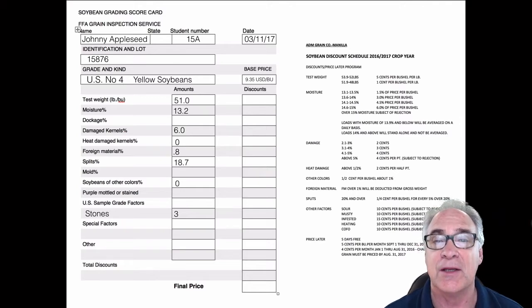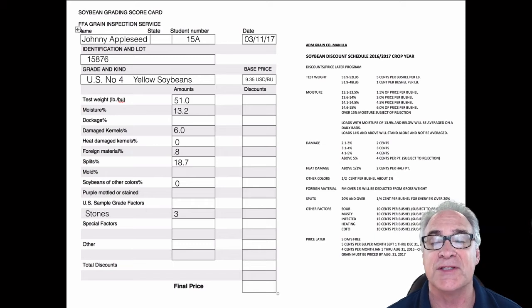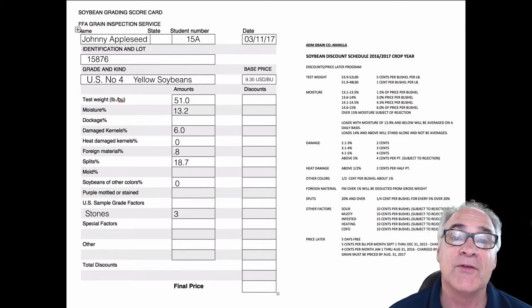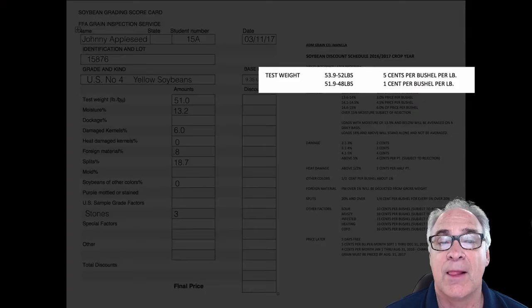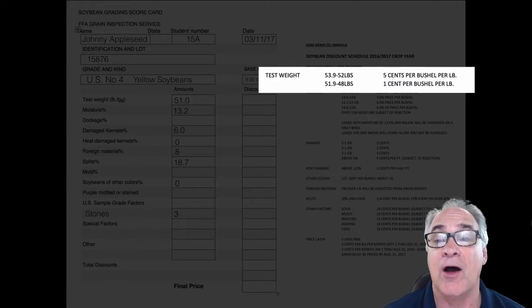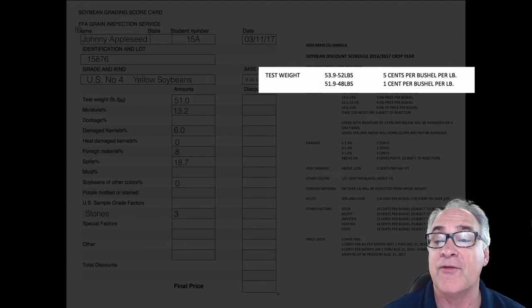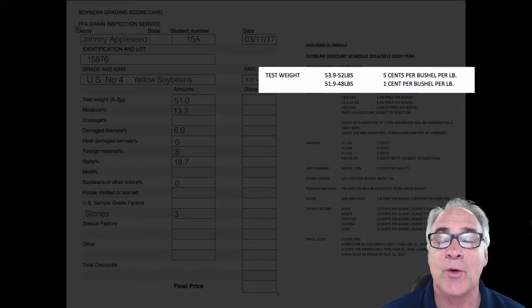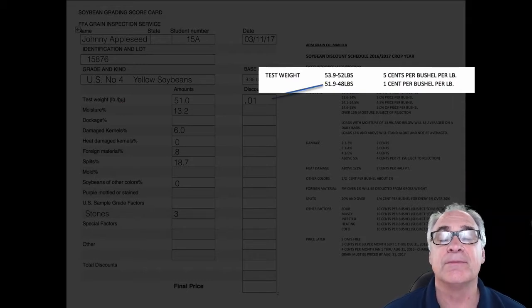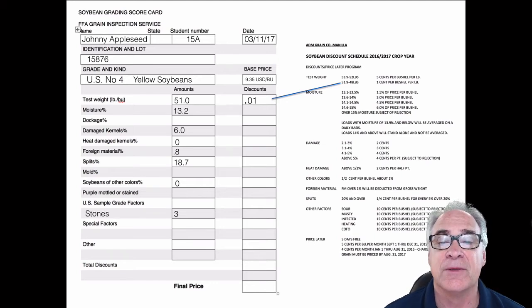Now we're going to go into discount sheets. Now that we've got all the amounts listed according to the load analysis, now we're going to go in the column that says discounts. The first thing on the list of course is test weight. Our test weight falls at 51 pounds per bushel. So if you look at test weight on the discount side, you'll notice that it falls between 59.1 and 48 pounds, so we're going to get a one cent deduction.